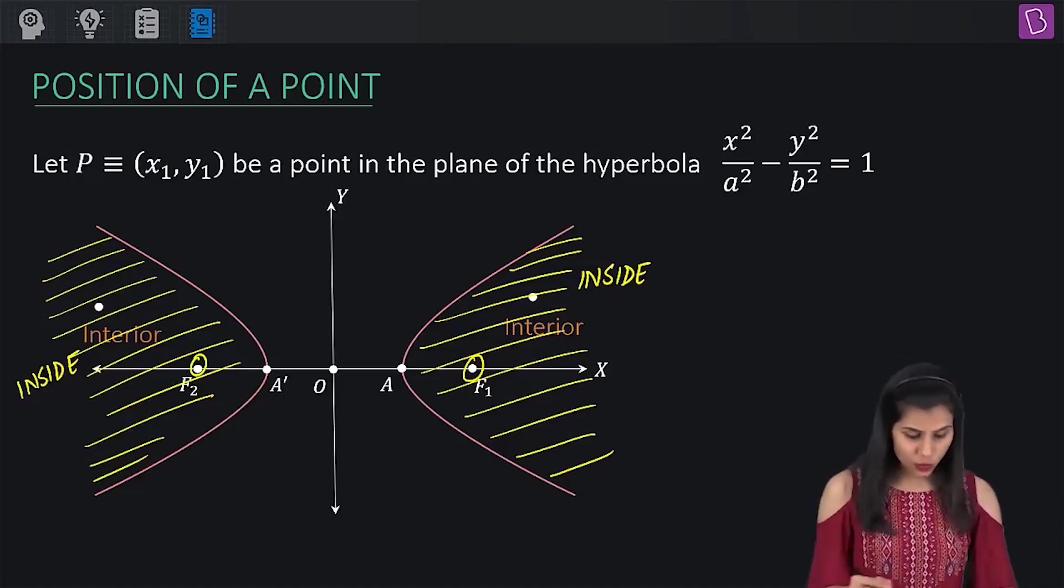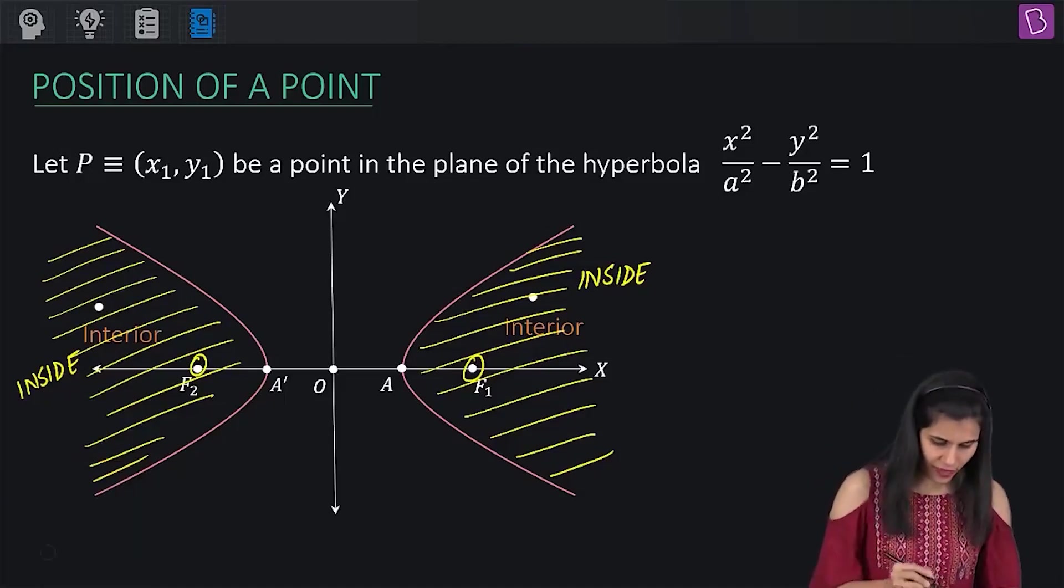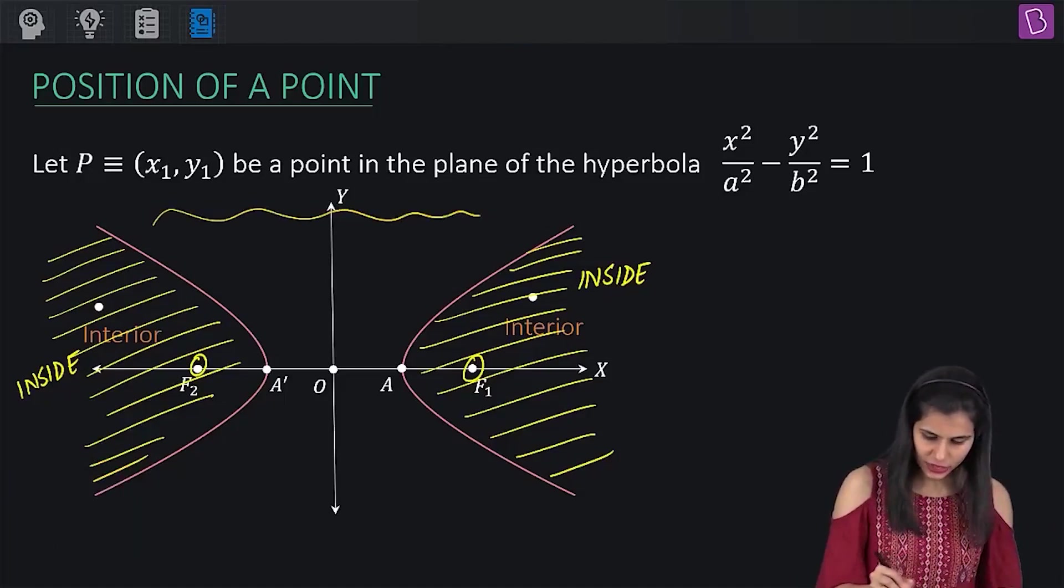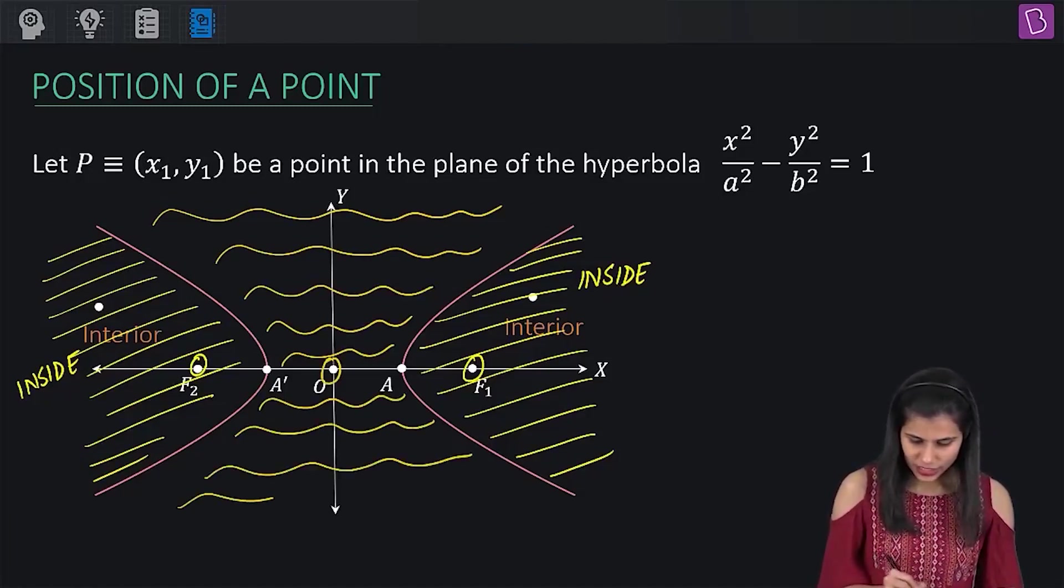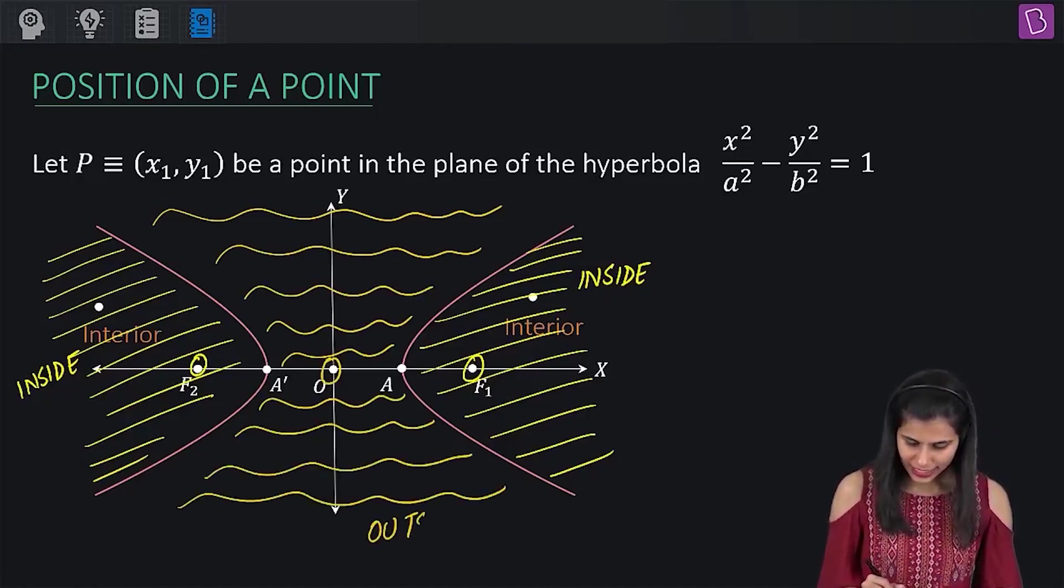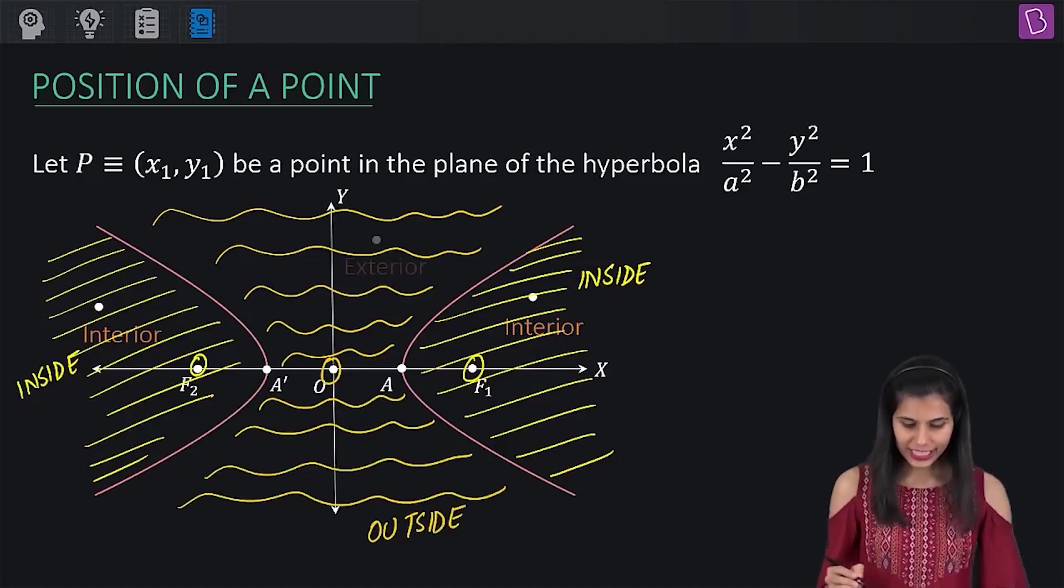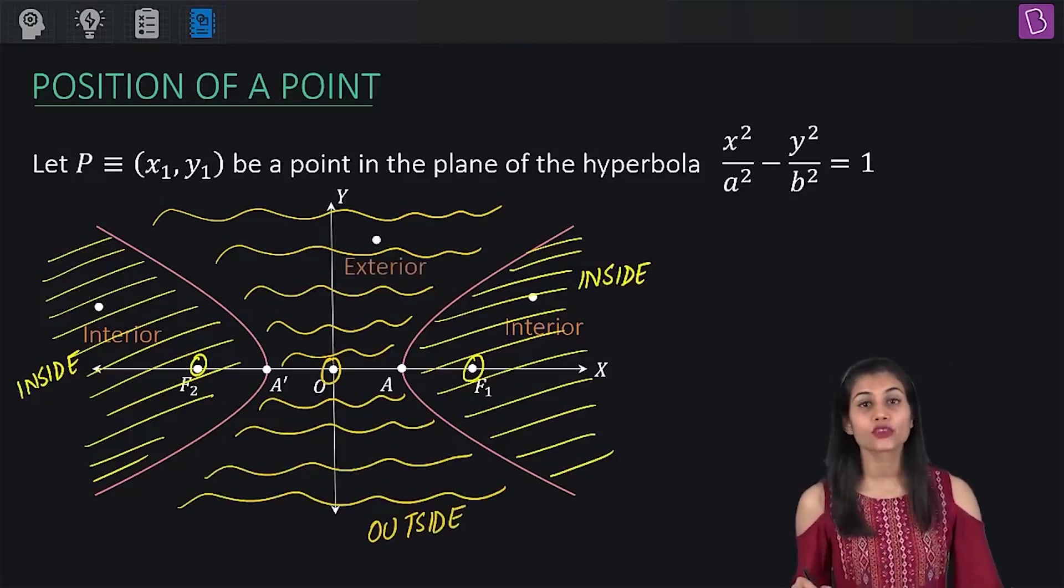Next, the region which is devoid of any focus, which is this region, it is also the region which contains the center. This constitutes outside the hyperbola and any point coming from here is called the exterior point of the hyperbola.